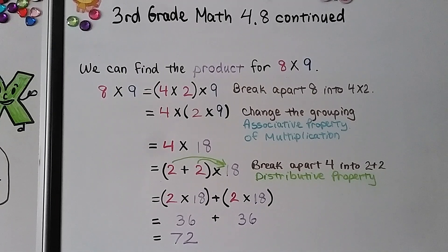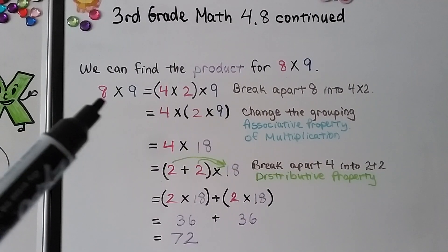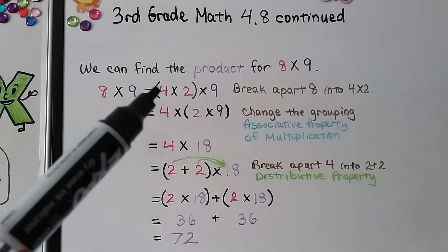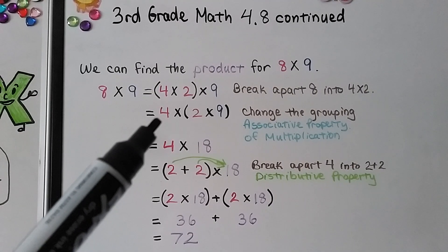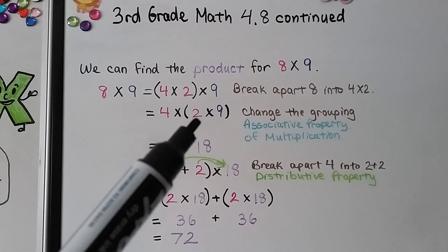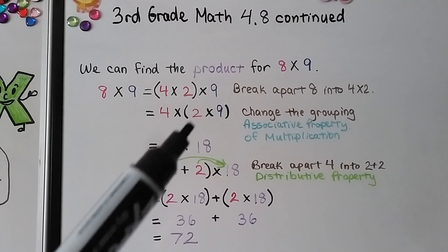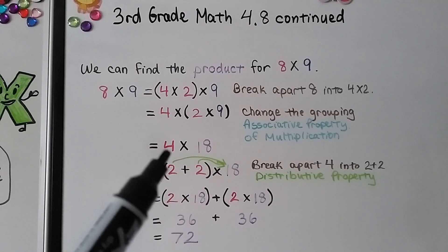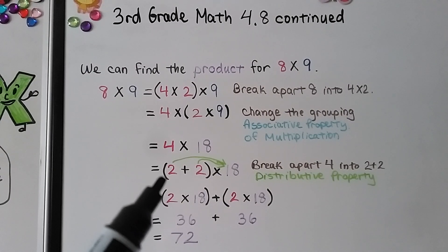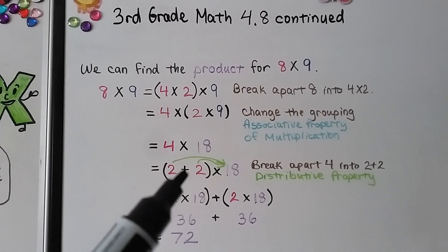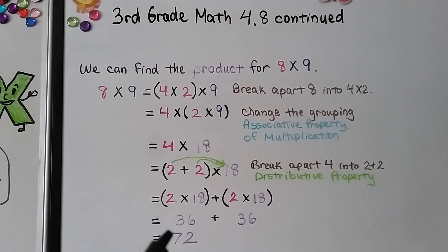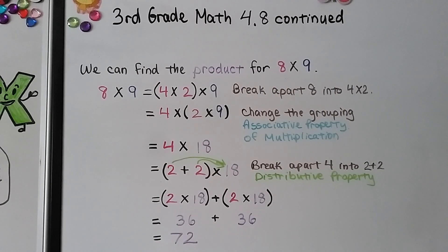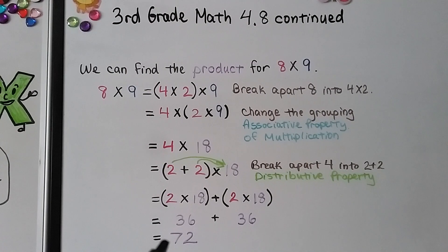We can find the product for 8 times 9. We can break apart the 8 into a 4 times 2. We can change the grouping with the associative property, so now we have 4 times (2 times 9) in parentheses. We do the parentheses first — 2 times 9 is equal to 18 — so we have 4 times 18. We break apart the 4 into a 2 plus 2 and use the distributive property: 2 times 18 plus 2 times 18. That's 36 plus 36, which equals 72. So 8 times 9 is equal to 72.